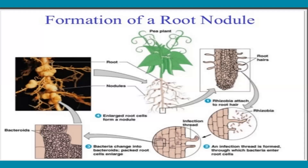The bacteria reproduce greatly inside the thread. They are liberated into the cytoplasm and stimulate the cortex or pericycle cells to divide continuously. Due to this continuous division, proliferation of the tissues takes place and a mature nodule develops. The nodule is made up of host cells filled with bacteria. In the third step, bacteria change into bacteroids — enlarged, non-motile bacteria undergoing continuous divisions — resulting in a mature knob-like or bubble-like nodule structure made up of host cells.